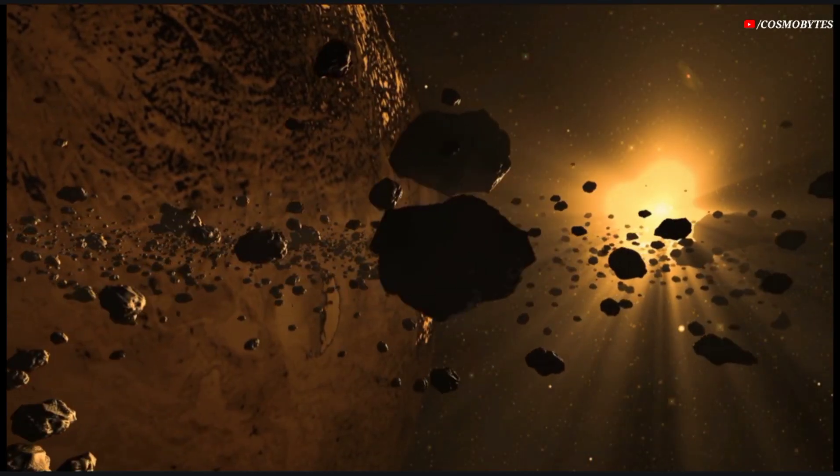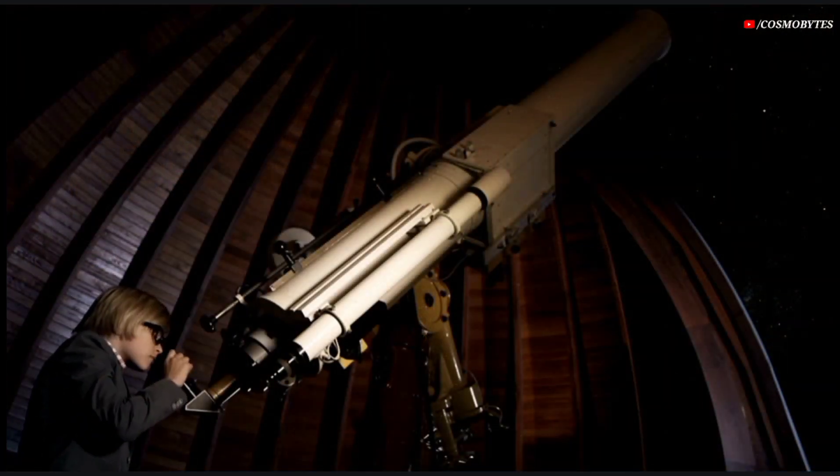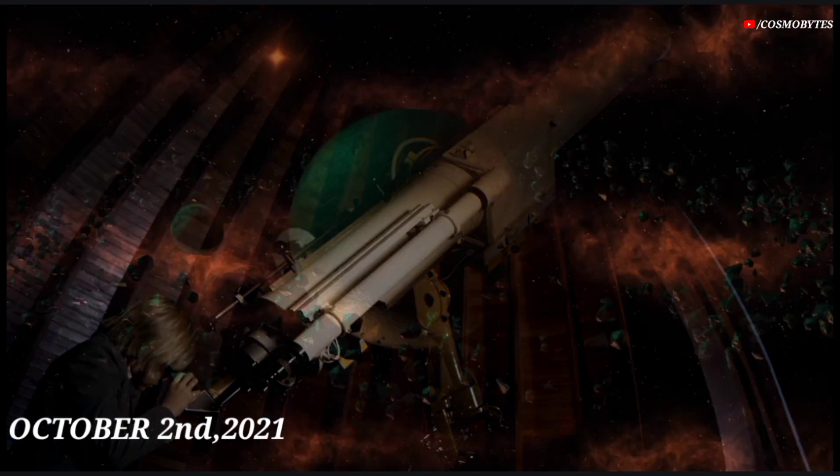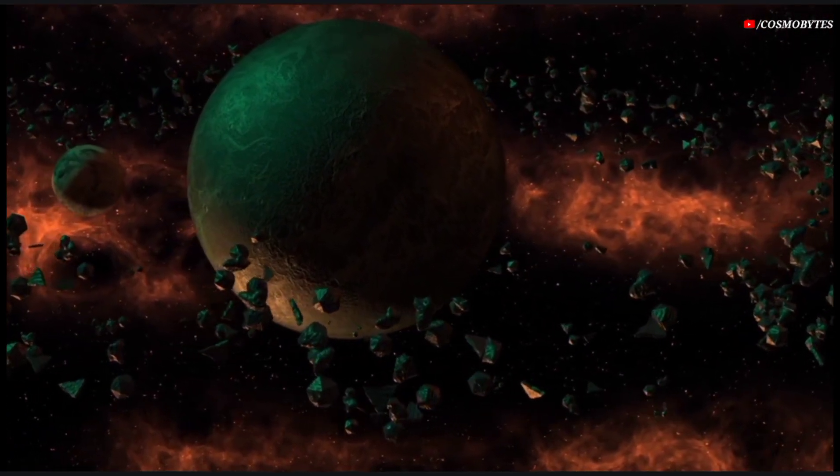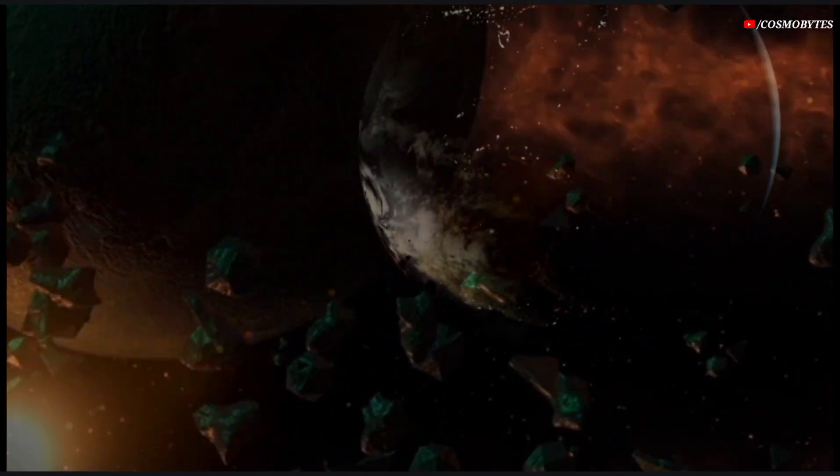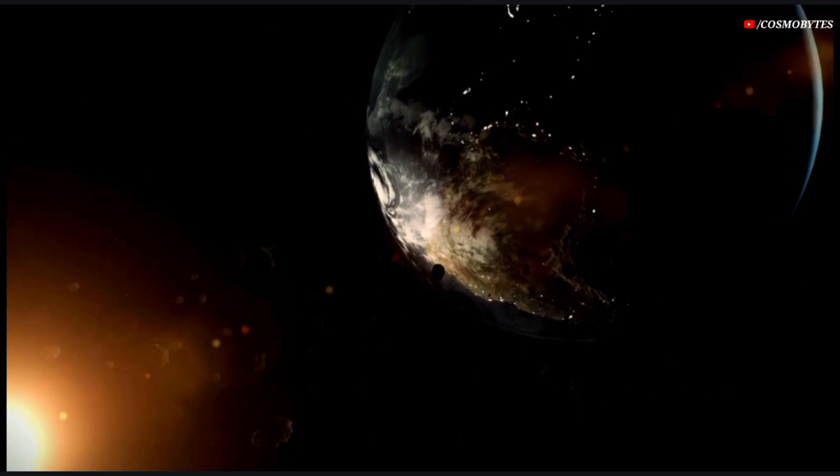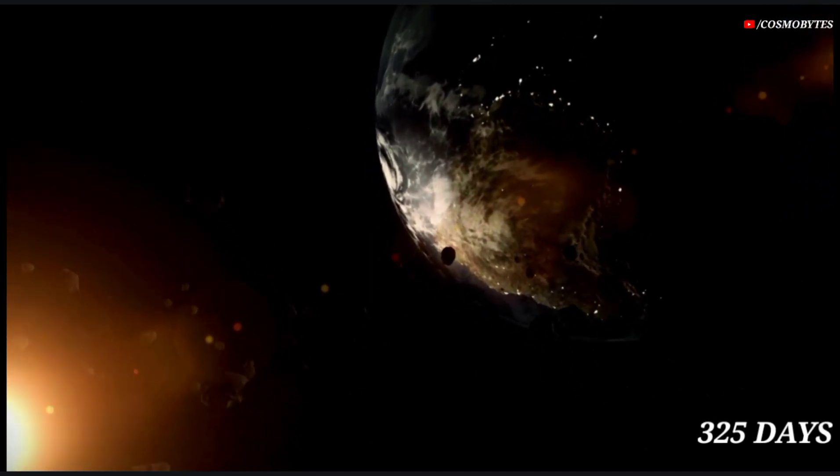The asteroid TL 2021 was detected on October 2, 2021. This near-Earth object belongs to the Aden Group. It makes one orbit around the Sun in 325 days.